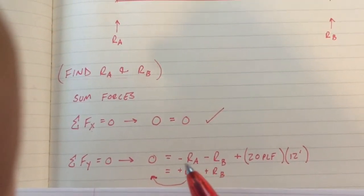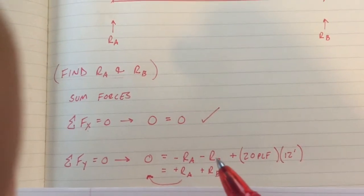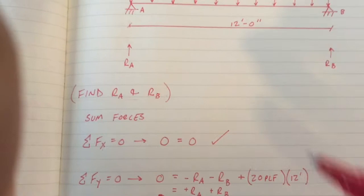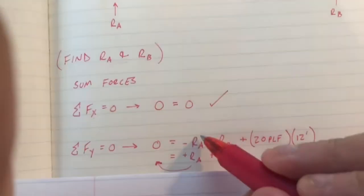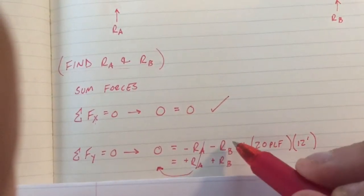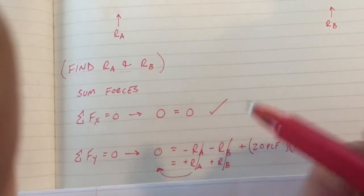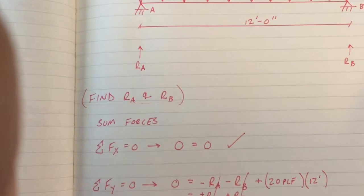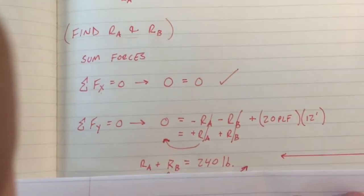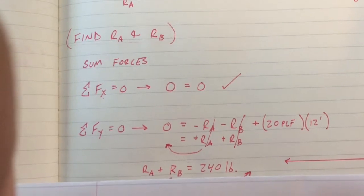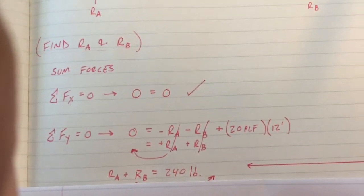We have two negative values, negative RA and negative RB. We need to add those values to the other side so that these forces cancel on this side and are brought over to the left hand side. This leaves us with an equation of RA plus RB equals 240 pounds.